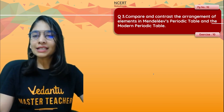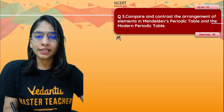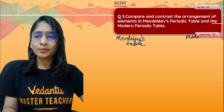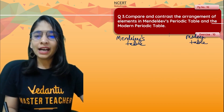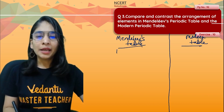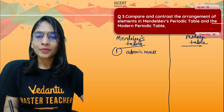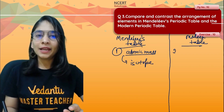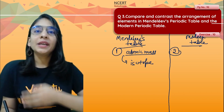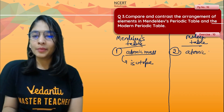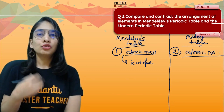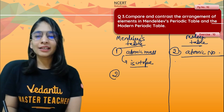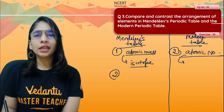Question number 3, worth about three marks: Compare and contrast the arrangement of elements in Mendeleev's Periodic Table and the Modern Periodic Table. In Mendeleev's table, elements are arranged based on atomic mass — which is problematic because isotopes of the same element can have different masses, and we cannot repeat an element. In the modern periodic table, arrangement is based on atomic number, and since no two elements can have the same atomic number, the isotope problem is completely solved.